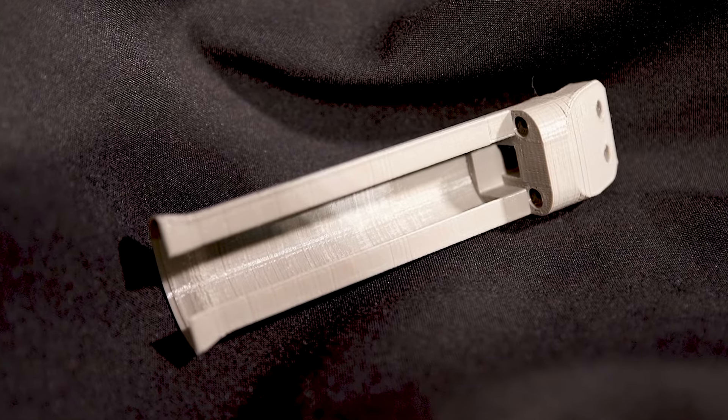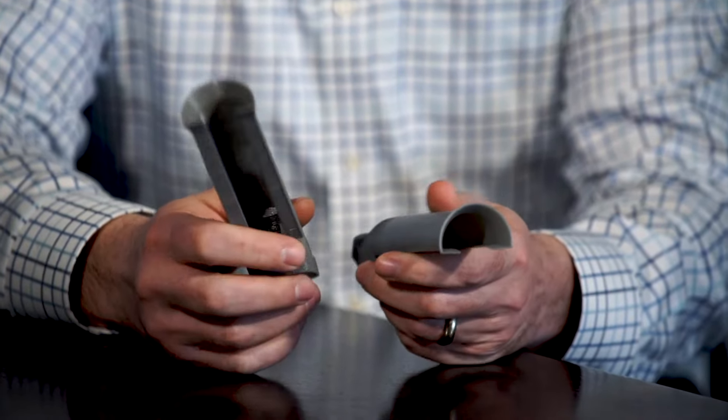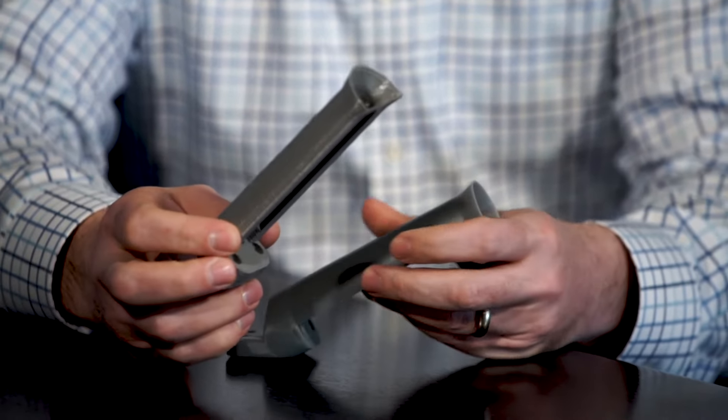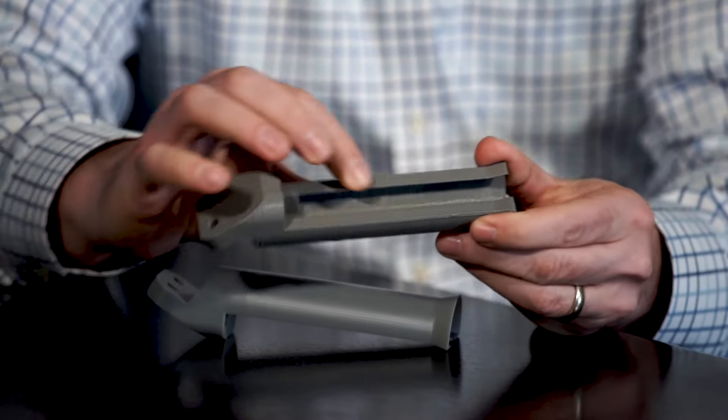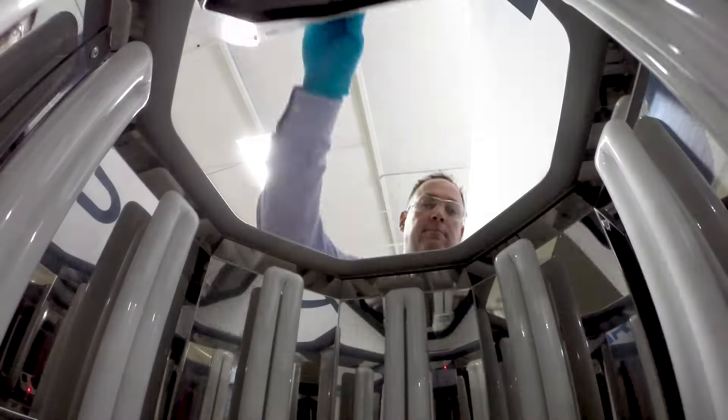Our customer brought a part into us that they had been struggling to 3D print. They needed 30 parts with a very fast turnaround. With FDM-style 3D printing, there were very noticeable layer lines and even some part defects. With Figure 4, they didn't experience any of that.